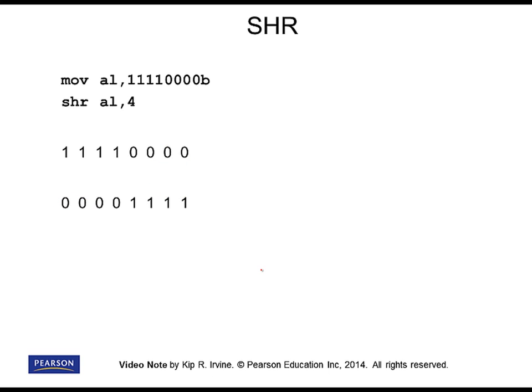As with shift left, sometimes we want to move the upper four bits in a number to the lower half — perhaps to exchange the two hexadecimal digits. Here we have four bits in the upper part of the number. They are shifted into the lower four bits of the result, and all of the bits that have been circled disappear.